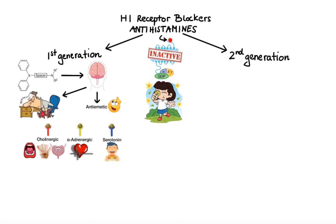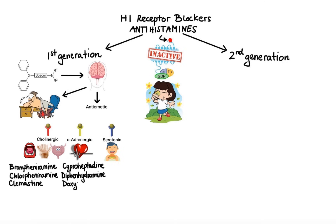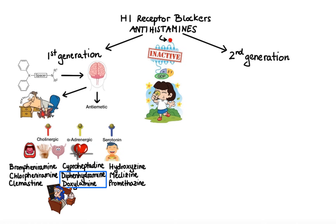Examples of first generation H1 antihistamines include brompheniramine, chlorpheniramine, clemastine, cyproheptadine, diphenhydramine, doxylamine, hydroxyzine, meclizine, and promethazine. Although all of these drugs are useful in relieving allergy symptoms, some are often used for other therapeutic indications. For example, diphenhydramine and doxylamine are often used in the treatment of insomnia, while meclizine and promethazine are more often used in the treatment of nausea and vomiting related to conditions such as motion sickness.